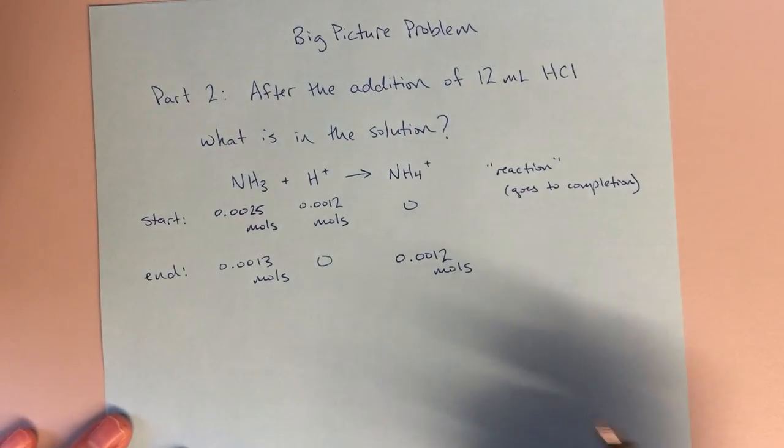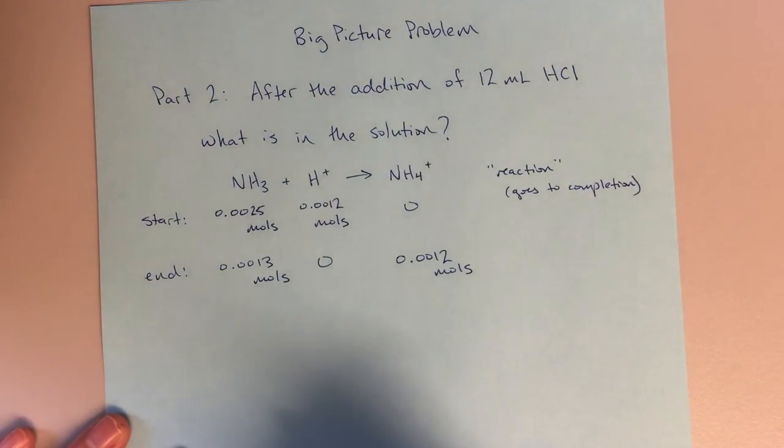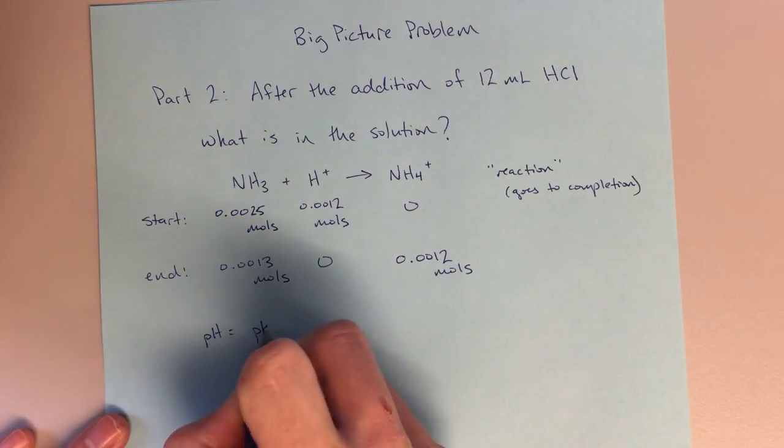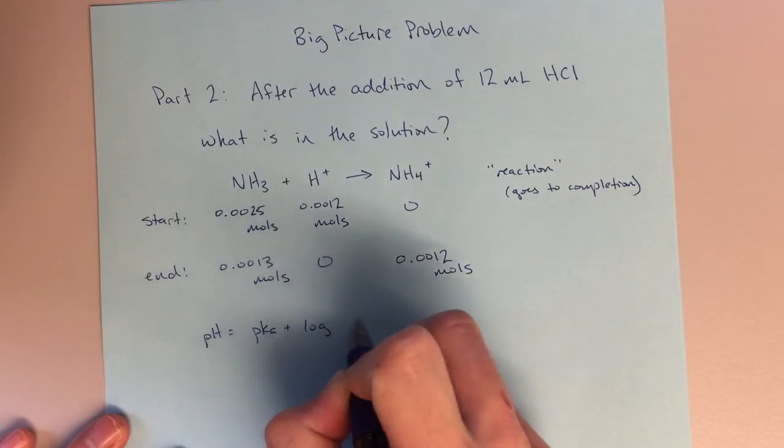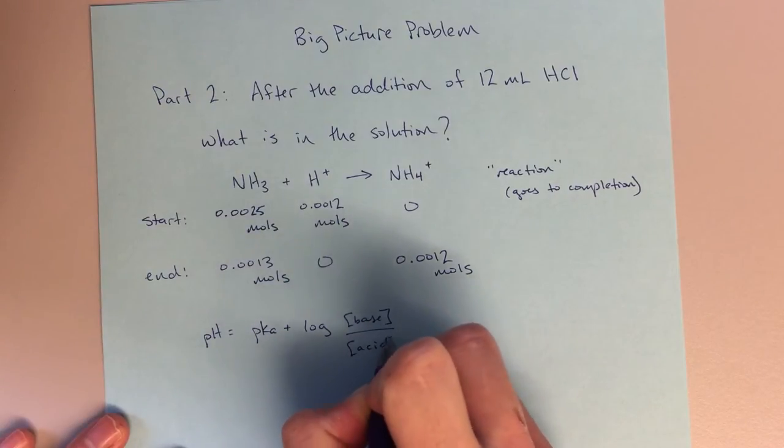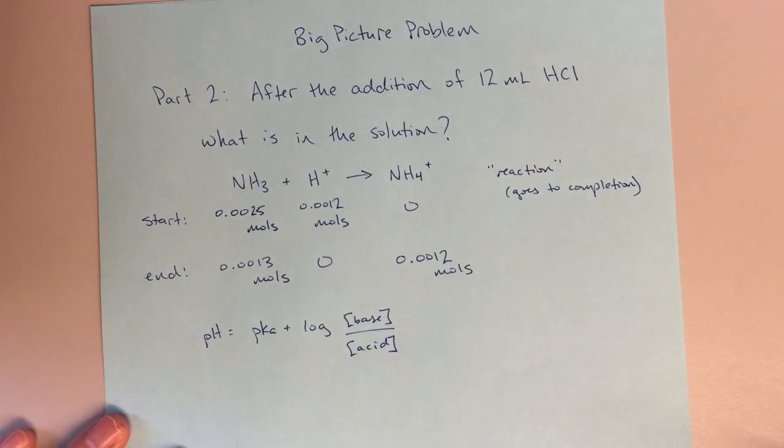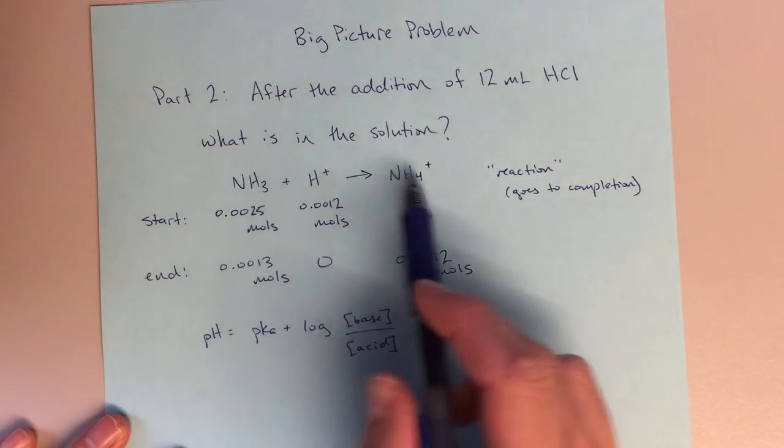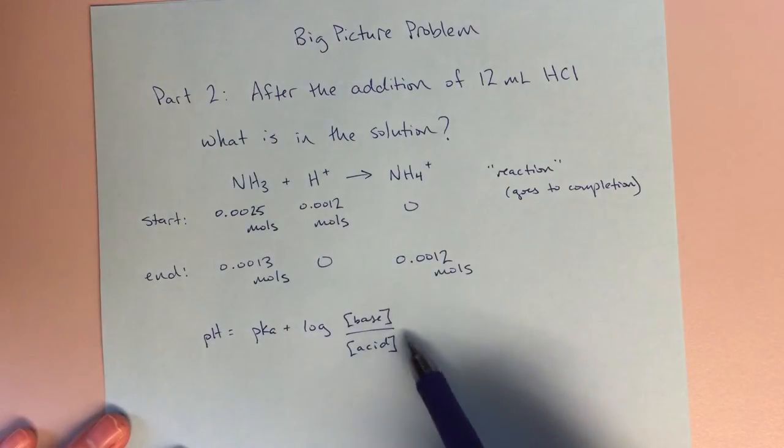So I'm going to go ahead and let's just use the Henderson-Hasselbalch equation. When we do that, pH equals pKa plus the log of the concentration of the base over the concentration of the acid. And the concentration of base and acid here, that's going to be from my NH3 and NH4+. Those are conjugate acid-base pairs.